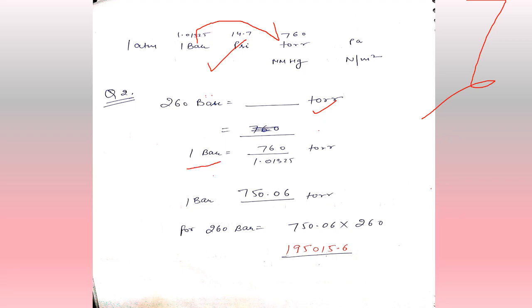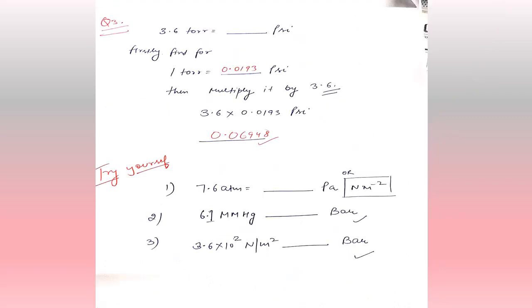First, calculate for 1 bar: divide 760 by 1.01325 to get 1 bar equals 750.06 torr. Then multiply by 260 to easily get 195,015.6 torr.